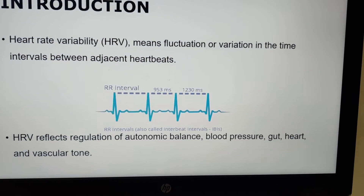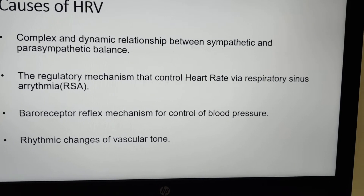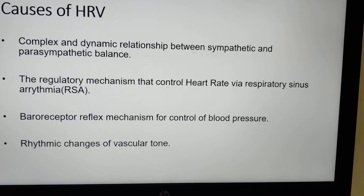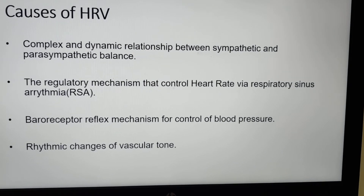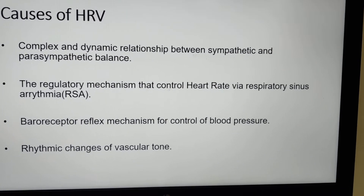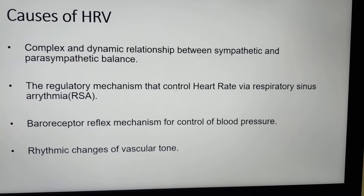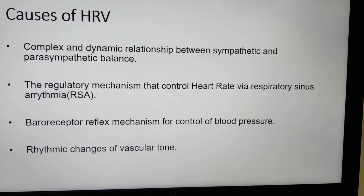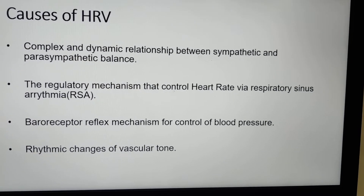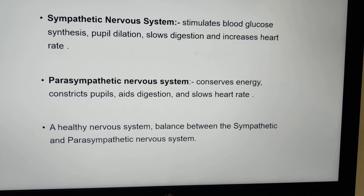The causes of heart rate variability involve the complex and dynamic relationship between sympathetic and parasympathetic balance, meaning the autonomic nervous system. This includes the regulatory mechanisms that control heart rate via respiratory sinus arrhythmia, the baroreceptor reflex mechanism for control of blood pressure, and rhythmic changes of vasculature. The sympathetic nervous system stimulates blood glucose synthesis, pupil dilation, and increases the heart rate.